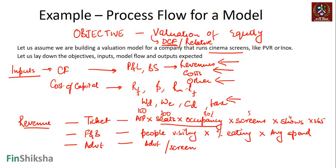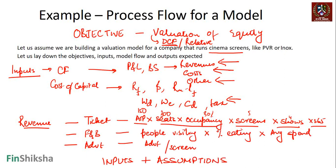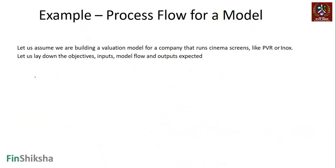Once you have defined these equations, we know what data points are available and what data points are needed. We know what are the inputs which are available, and we will need to make an assumption for whatever is not available. So inputs plus assumptions come from this process flow - this thinking of how does a company run its business. Next comes the process flow: we have our revenues.